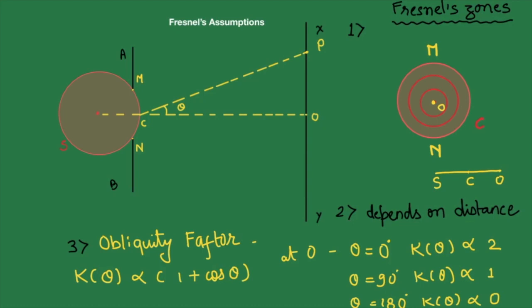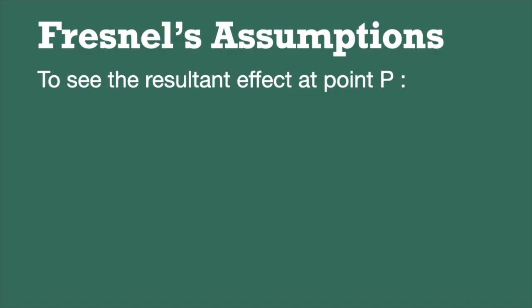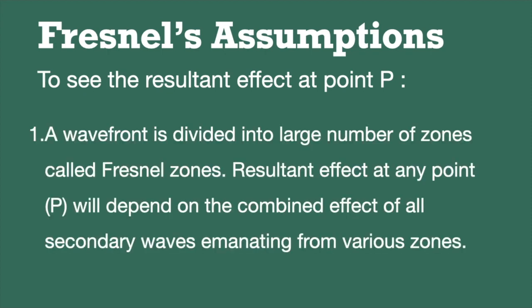So these are the three important Fresnel's assumptions. Let us have a recap of it. In Fresnel's class of diffraction, Fresnel made three important assumptions for explanation of diffraction. First, a wavefront is divided into large number of zones called Fresnel's zones. Resultant effect at any point will depend upon the combined effect of all secondary waves emanating from the various zones.